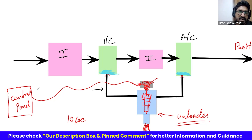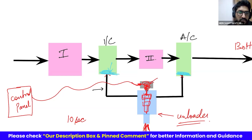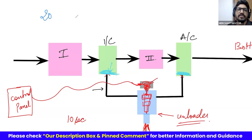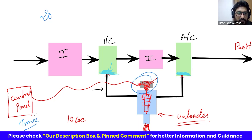Unloading happens during starting and also during stopping. During stoppage, you want to drain any water that has been collected. During running — say if it runs for 20 minutes — some designs also unload for a few seconds every 5–10 minutes in between. So unloading occurs at starting, stopping, and periodically in between. A timer inside the control panel calculates the time for each phase and then gives the signal to the solenoid.